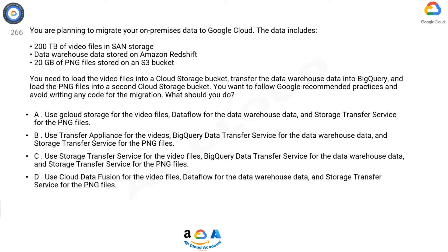Question 266. You are planning to migrate your on-premises data to Google Cloud. The data includes 200 terabytes of video files in SAN storage, data warehouse data stored on Amazon Redshift, and 20 gigabytes of PNG files stored on an S3 bucket. You need to load the video files into a Cloud Storage bucket, transfer the data warehouse data into BigQuery, and load the PNG files into a second Cloud Storage bucket. You want to follow Google recommended practices and avoid writing any code for the migration.